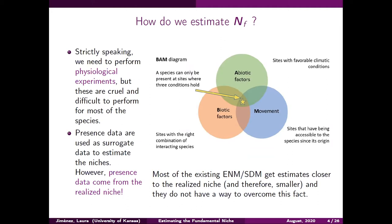Strictly speaking, the fundamental niche should be estimated through physiological experiments in which you bring different individuals of the species into the lab, put them in chambers where you can control environmental conditions, and record whether or not the individuals survived. All environmental combinations suitable for the species should be inside the fundamental niche. However, performing such experiments is not ideal — these experiments are cruel and difficult for most species. This is why many approaches to ecological niche modeling use presence data to estimate niches.